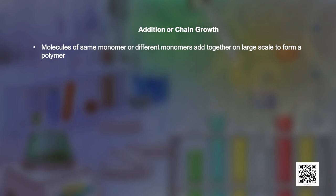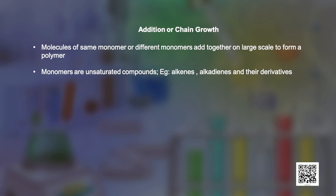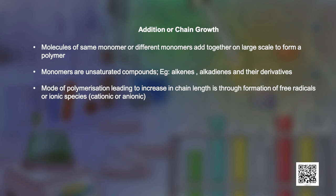We will first talk about addition or chain growth polymerization. Here the molecules of the monomer or different monomers add together on a large scale to form a polymer. The monomers used are unsaturated compounds, mainly alkenes or alkadienes and their derivatives. This mode of polymerization leading to chain growth can take place through the formation of either free radicals or ionic species, which can be cationic or anionic in nature.